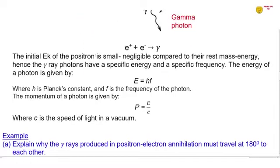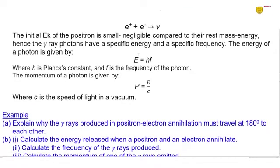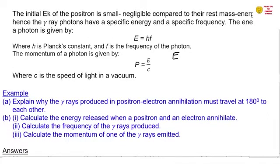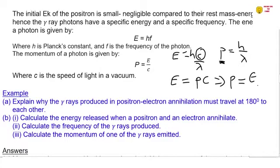The initial kinetic energy of the positron is small. In other words, it is negligible compared to their rest mass energy. Hence, the gamma ray photons have a specific energy and a specific frequency, not a range. The energy of a photon is given by E = hf. From this, E = hc/λ. And we know from the de Broglie relationship that p = h/λ. This is from quantum physics. So this means that if you divide by c, you're going to get p. So we can say E = pc. Therefore, p = E/c. So that's where it comes from.